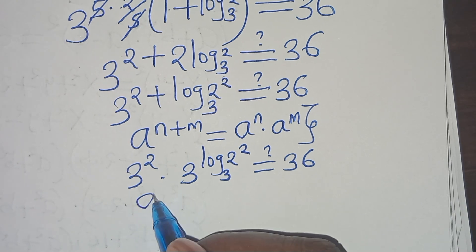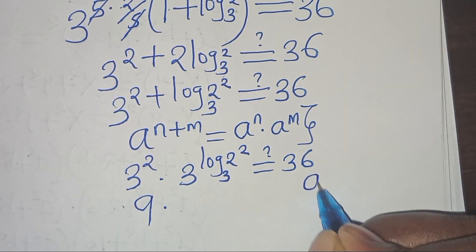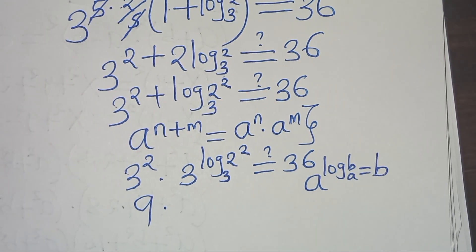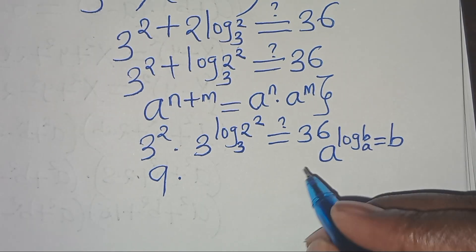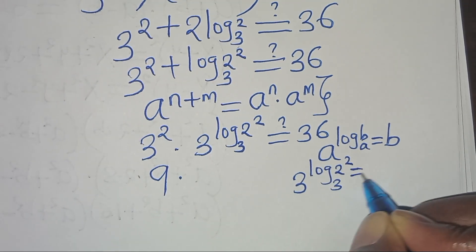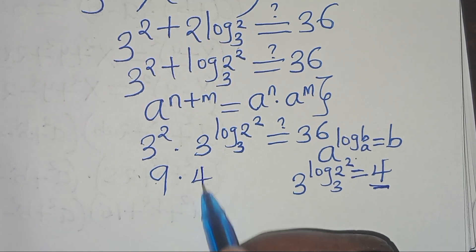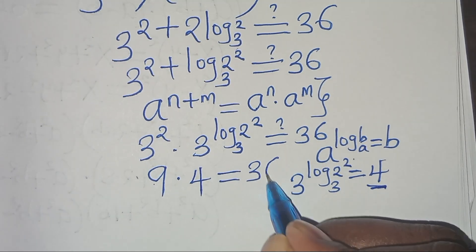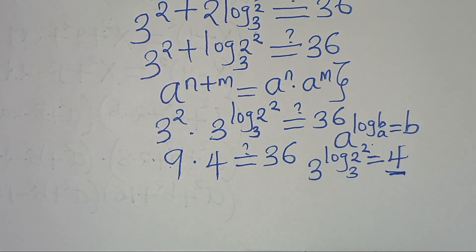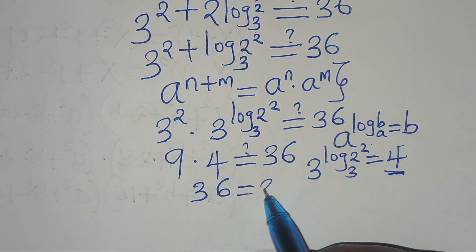Now 3 squared is 9, multiplied by 3 to the power of log₃(2²). This is in the form a^(log_a(b)), which equals b. So 3^(log₃(2²)) gives us 2², which is 4. Substituting: 9 times 4, which should equal 36 — and indeed 9 times 4 equals 36.